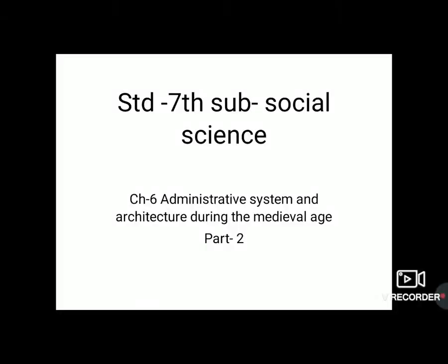Standard 7th Subject Social Science, Chapter 6: Administrative System and Architecture During the Medieval Age. In Part 1, we have learnt about the administrative system and the literature of Rajput rulers — how they run their kingdom, how they collect the tax from their citizens, and what literary works were done at the time of Rajput rulers, which books were written and what are the contents of those books.